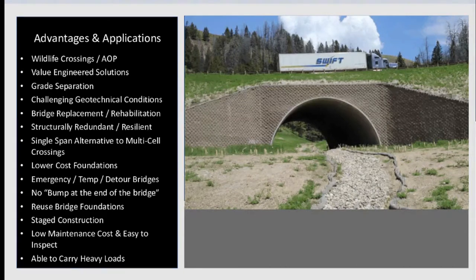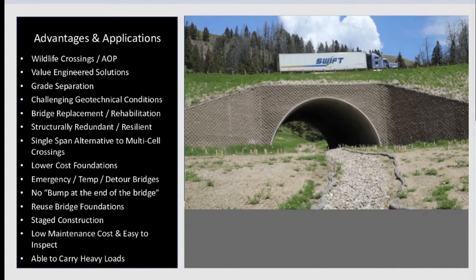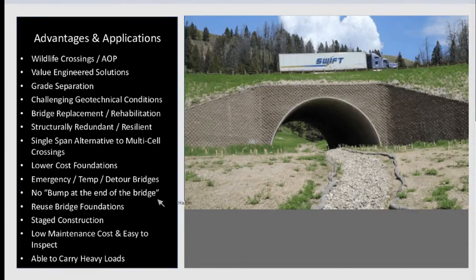Everything you need to design these is included in AASHTO and ASTM, but most of these structures are going to be designed by the manufacturer. If you come to them with basic project requirements, any qualified manufacturer should be able to help determine appropriate geometry and design. Grade separations are pretty common. Because of the flexibility of the structures, there are a lot of geotechnical challenges that might be harder to deal with using other structure types. These are often a single-span alternative to multi-cell crossings. If designed and constructed properly with the right foundations, you won't have that bump at the end of the bridge that you'd have with a rigid structure.